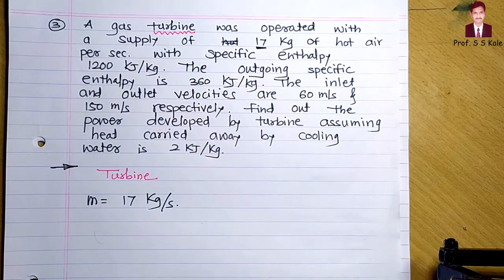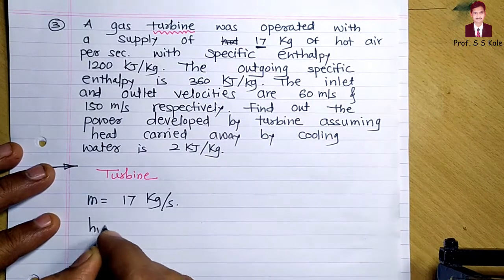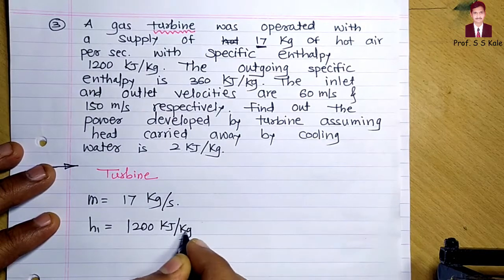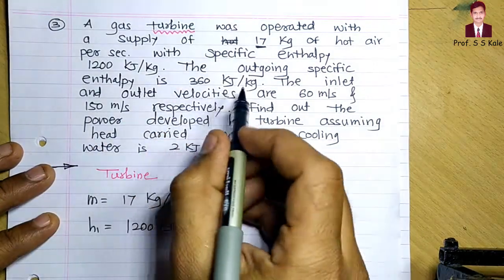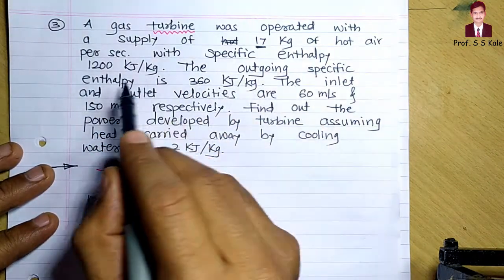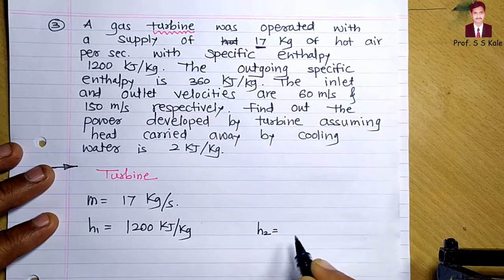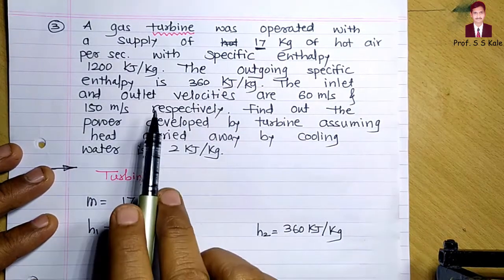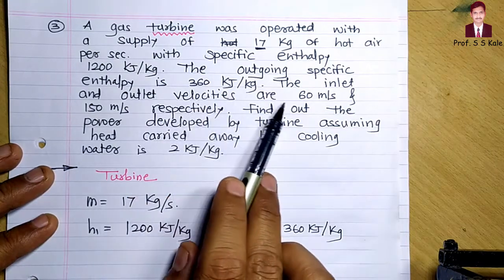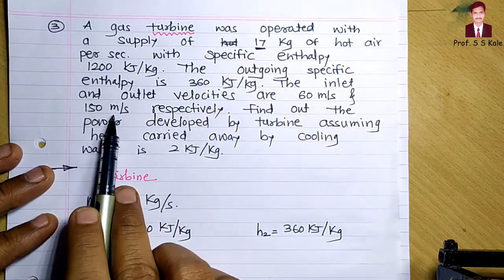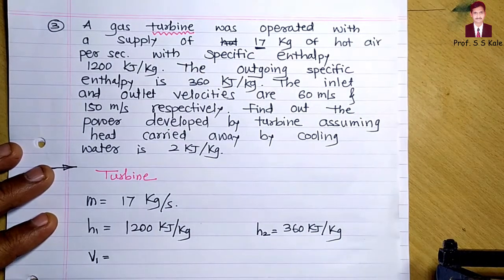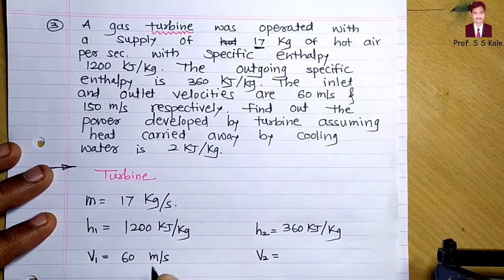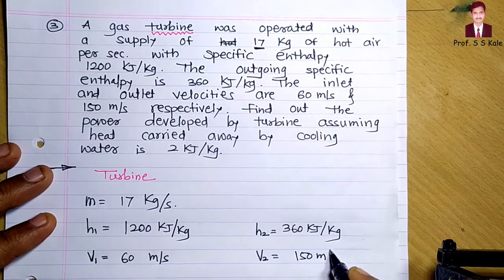The mass flow rate is 17 kg per second. The specific enthalpy at inlet H1 is 1200 kilojoule per kg. The outgoing specific enthalpy H2 is 360 kilojoule per kg. The inlet and outlet velocities are given: V1 is 60 meter per second and V2 is 150 meter per second.